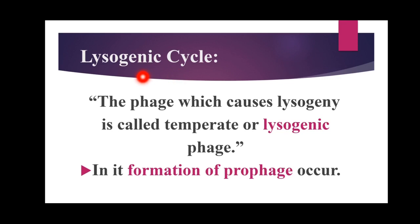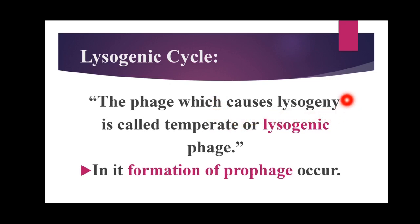The lysogenic cycle is also called the guest and host cycle. In this cycle, the virus is the guest and the host is the bacteria. In the lysogenic cycle, the phage has the ability to both reproduce and lyse the bacterial cell. That is why it is called the lysogenic cycle. The phage which causes lysogenic activity is called a temperate or lysogenic phage. In the lysogenic phage, the bacterial cell is not lysed — if lysis occurs, it is due to some environmental factor; otherwise, the bacteria cell is not harmed.